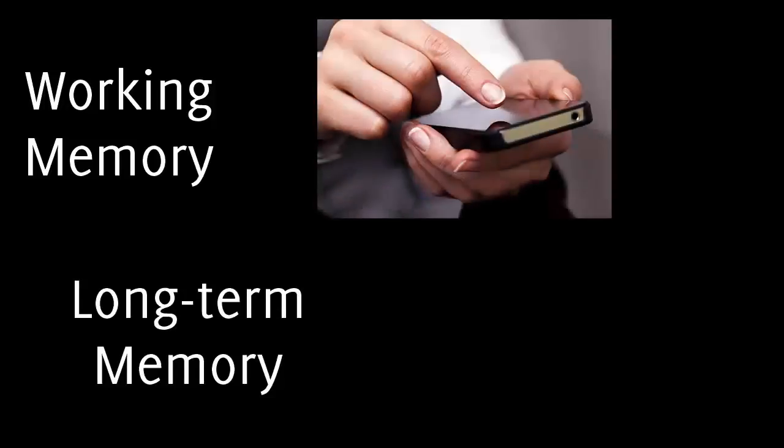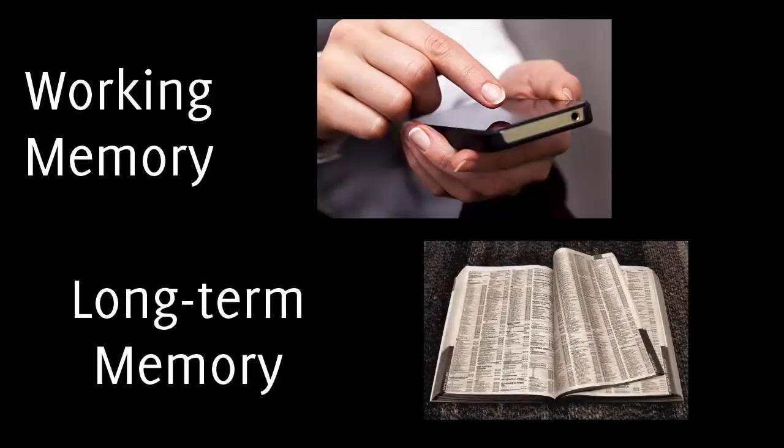As the name suggests, working memory is used to perform immediate functions, like dialing a phone number, while long-term memory is information stored for future use.